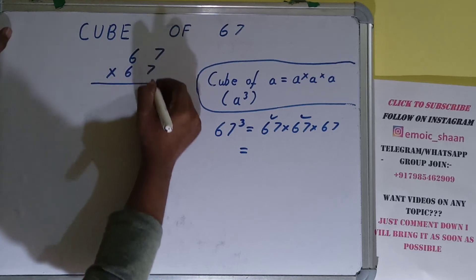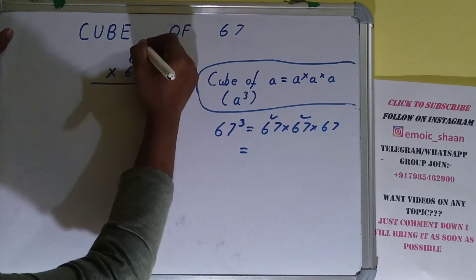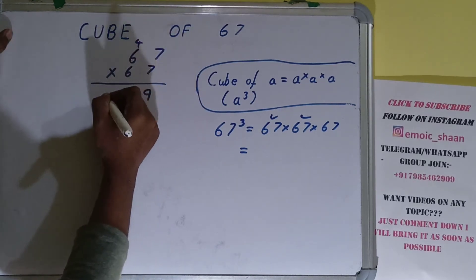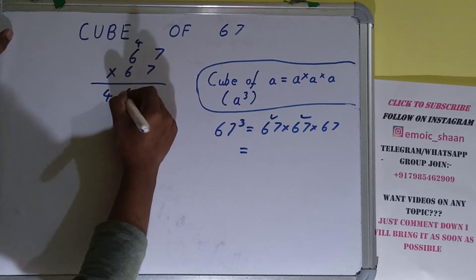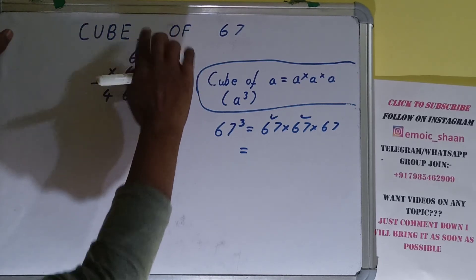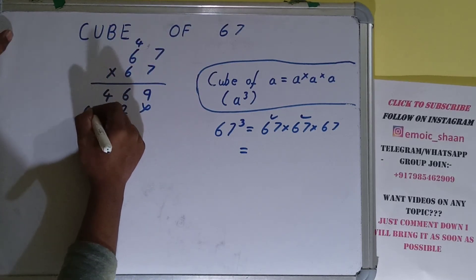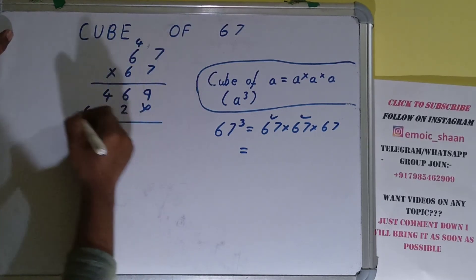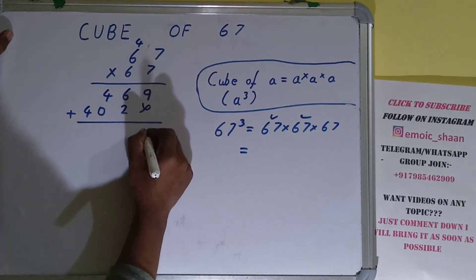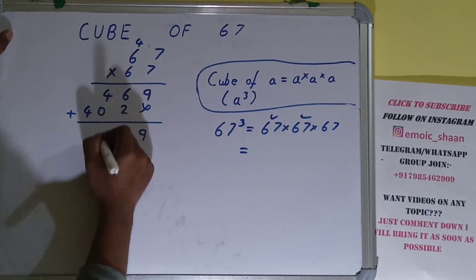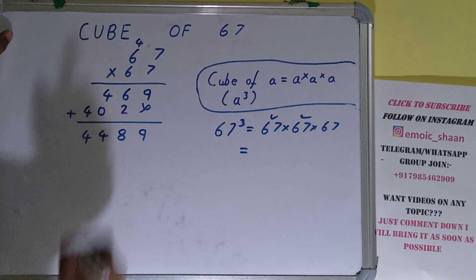7 × 7 is 49, 4 carry. 7 × 6 is 42 plus 4 is 46. 6 × 7 is 42, 4 carry. 6 × 6 is 36 plus 4 is 40. Adding them up: 4489.